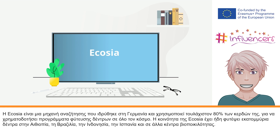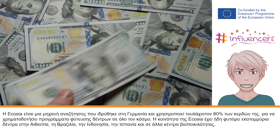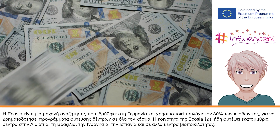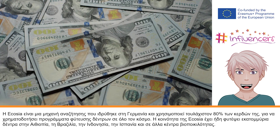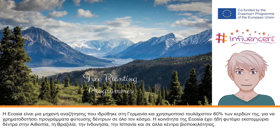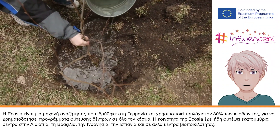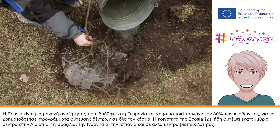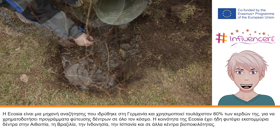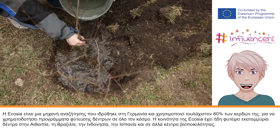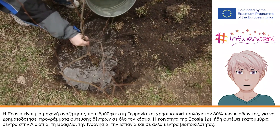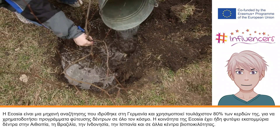Ecosia is a search engine founded in Germany that uses at least 80% of its profits from search ad revenue to finance tree planting programmes around the world. The Ecosia community has already planted millions of trees in Ethiopia, Brazil, Indonesia, Spain, as well as many other biodiversity hotspots.